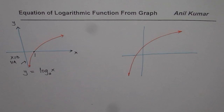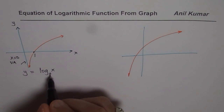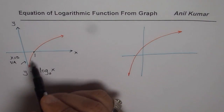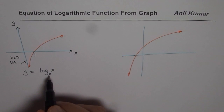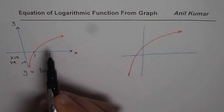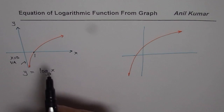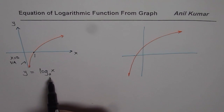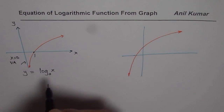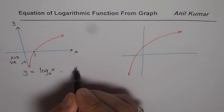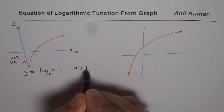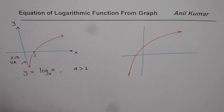That makes it a logarithmic function. Now, what are the possible values of a if I just give you a graph like this without any other point? In this kind of graph, a could have any value greater than 1, since the function is always increasing.